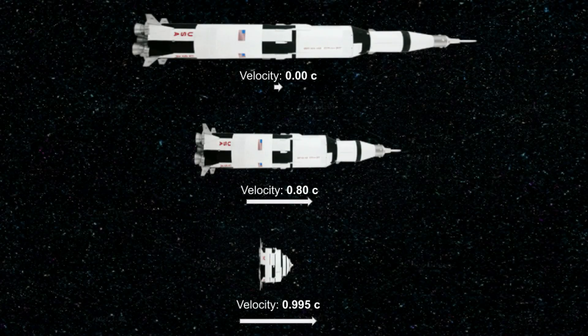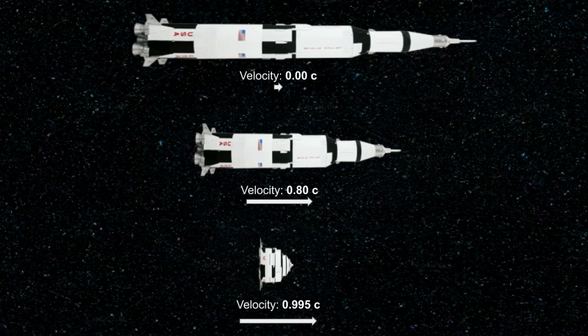When an object, say a 100 meter long rocket, is accelerated to 60% of the speed of light, its length decreases to 80% of its length when at rest. An object's length at rest is known as its proper length. But this formerly 100 meter rocket at this speed is just 80 meters long. What happens to its extra length? Where does it go?